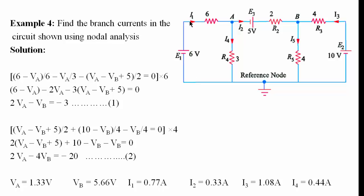From VA and VB we can find all branch currents: I1 is 6 minus VA over 6; I2 is VA minus VB plus 5 over 2; I3 is 10 minus VB over 4; I4 is VA over 3.